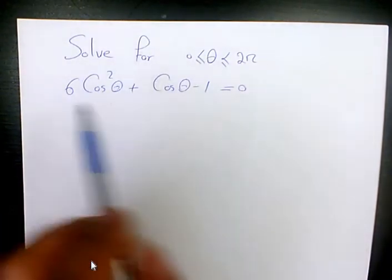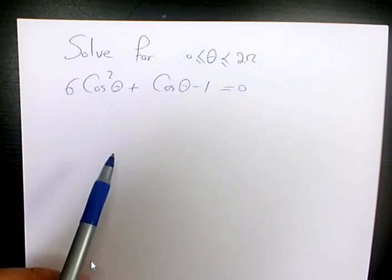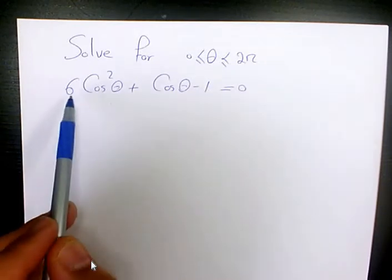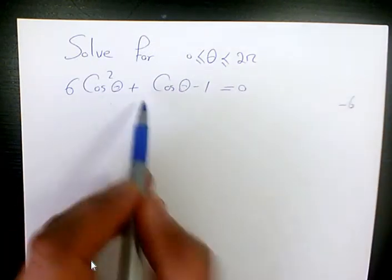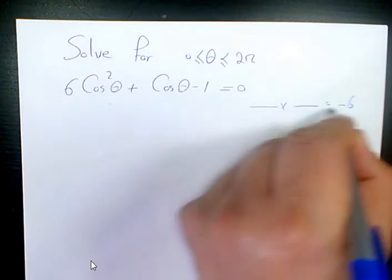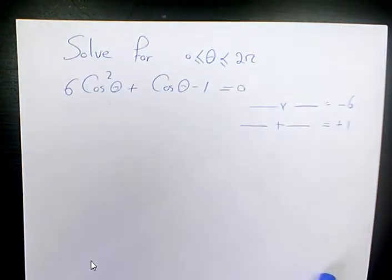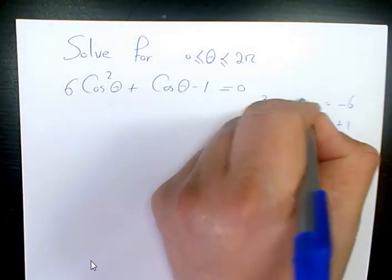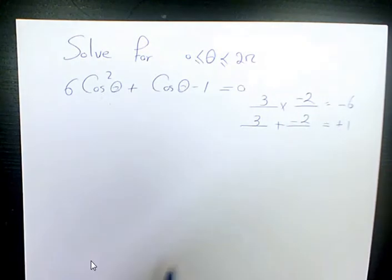So first thing I want to do here, we are dealing with a quadratic equation and I need to solve it by factoring method, the AC method. 6 times negative 1 is going to be negative 6, and here we have positive 1. So we are looking for 2 numbers that multiply to negative 6 and add to positive 1. It's going to be 3 and negative 2. When you multiply, it's negative 6. When you add, it's positive 1.